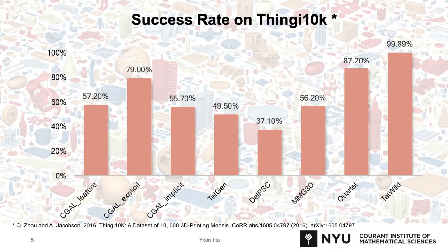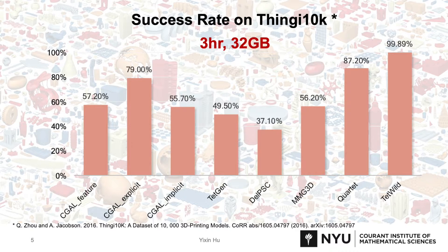We tested a collection of popular tetrahedral mesh algorithms on the Thingi10k dataset, which contains 10,000 real-world surface meshes, and plotted out the success rate of each method. The definition of success here is the method outputs a tetrahedral mesh within three hours using less than 32GB memory. As we can see in the plot, except the most recent method, TetWild on the right, the other methods have low success rates and are thus impossible to be used in automatic batch processing pipelines.